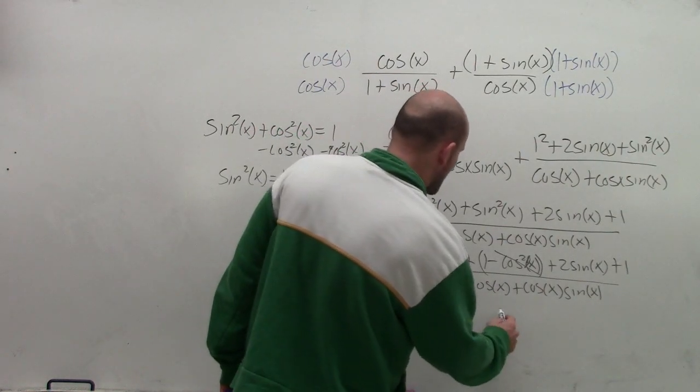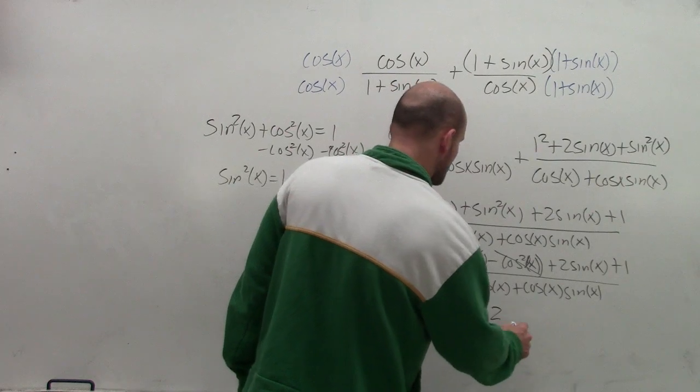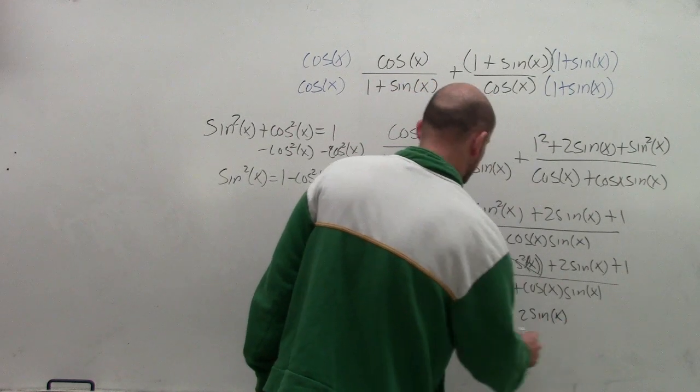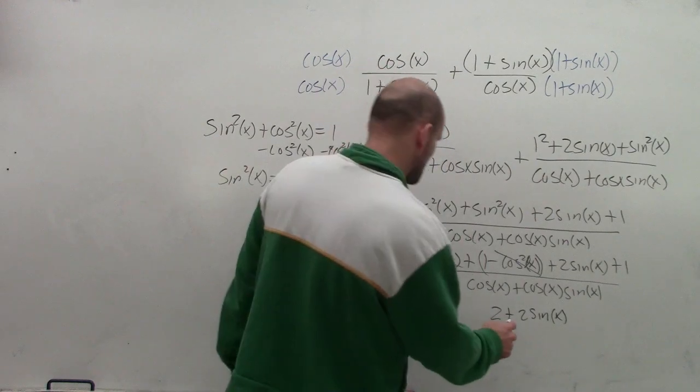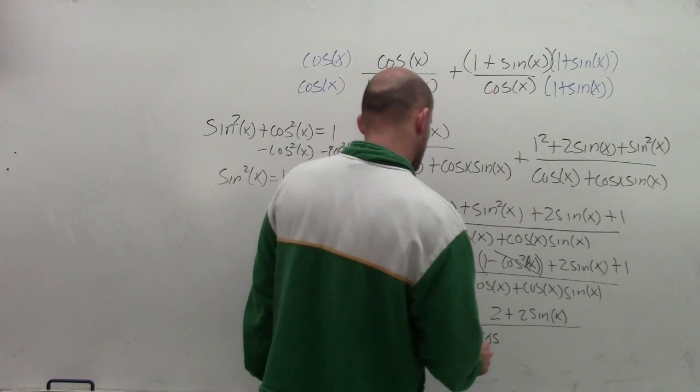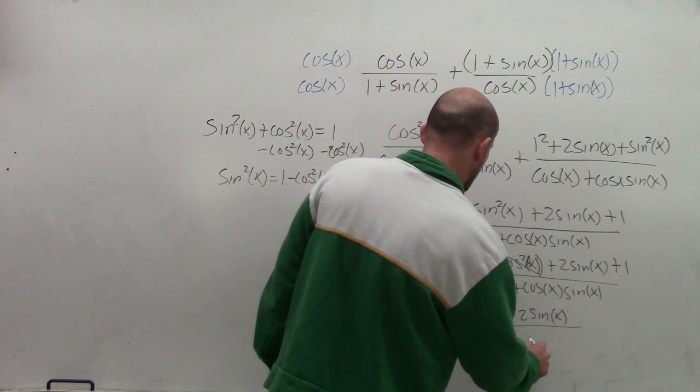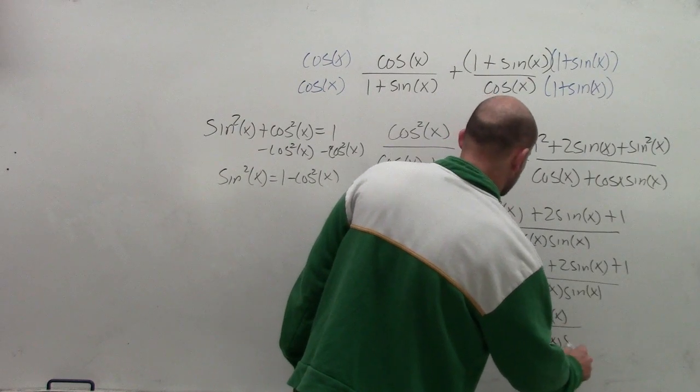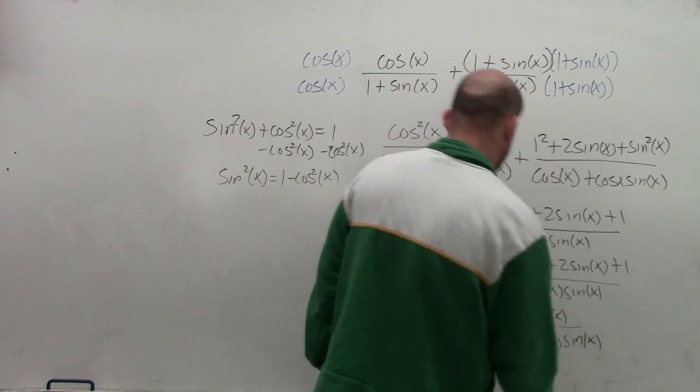Therefore, my final answer is going to be 2 plus 2 sine of x all over cosine of x plus cosine of x times sine of x.